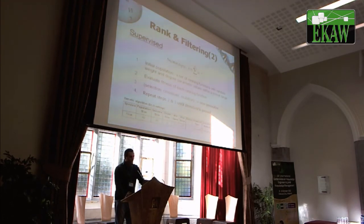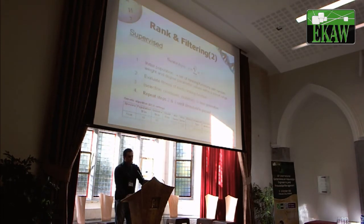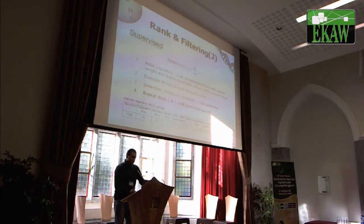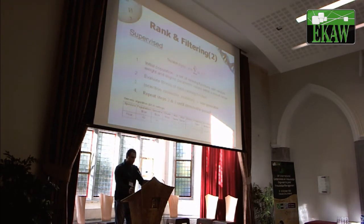We start with random W and D parameters, then create random ranking functions, apply those to a manually annotated training set, and measure the fitness of each ranking function. Then we perform selection, crossover, and mutation to create a new generation, and repeat until the defined threshold is passed.